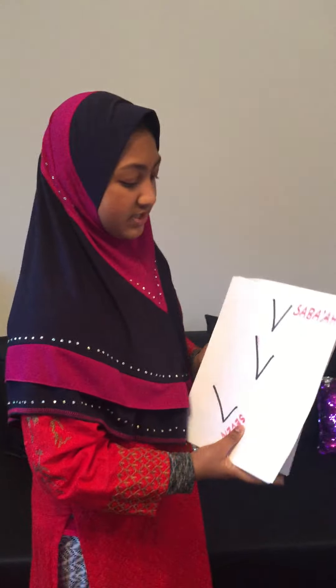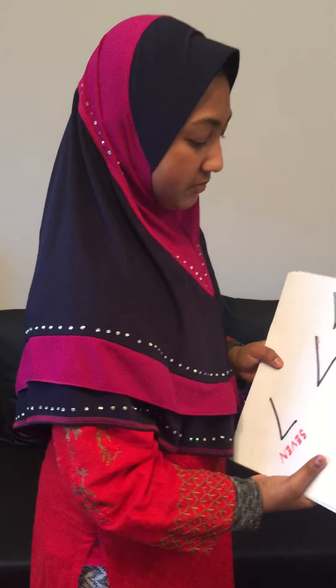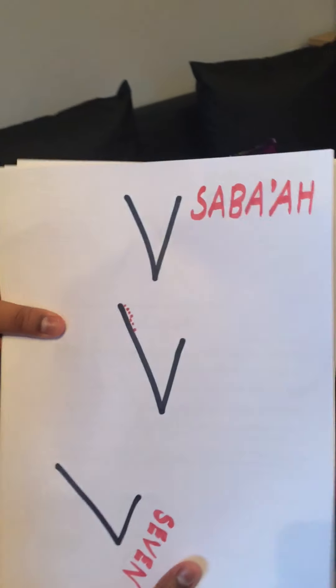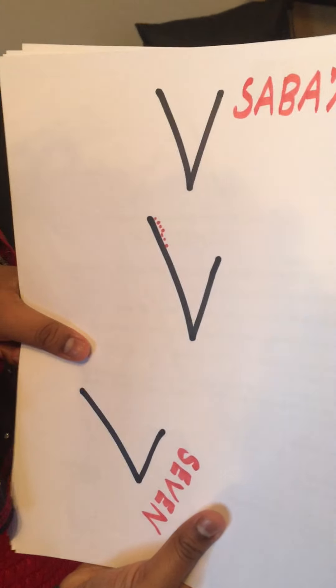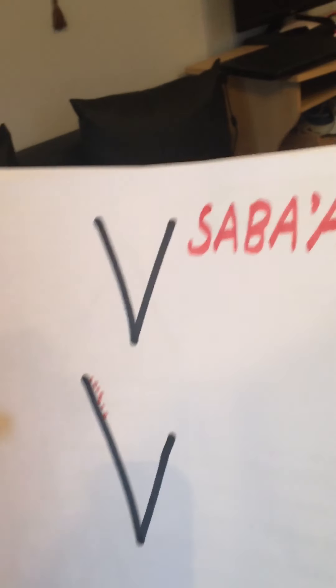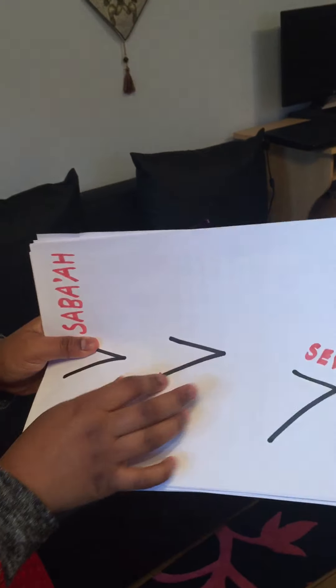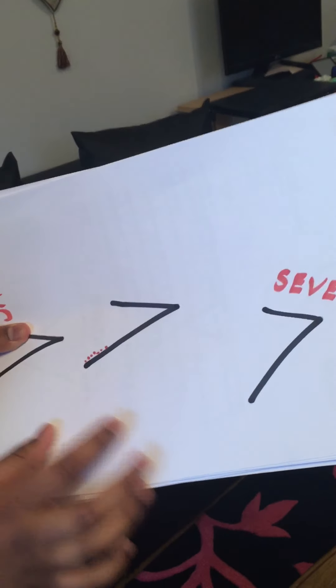Number seven in Arabic looks like this — a V shape — and it's called Sab'a. If you turn it around and extend this line a little bit, it becomes the seven we have now.